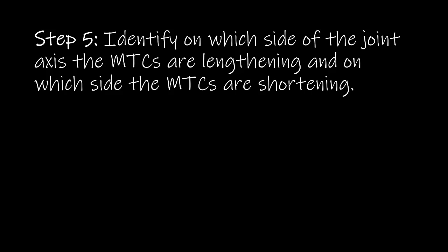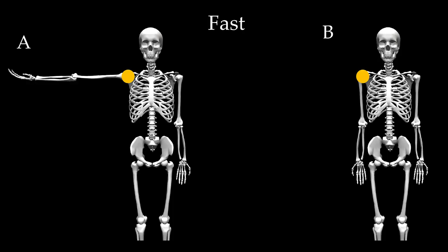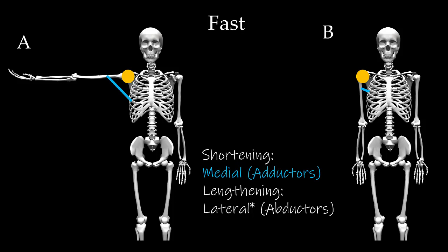Step 5 is to identify on which side of the joint axis the MTCs are lengthening and on which side they are shortening. I am only going to illustrate the MTCs on the medial side of the joint, as they are easier to see. We observe the length of the MTCs on the medial side in position A, and in position B they are shorter. So the MTCs that are shortening are the medial side MTCs — the adductors — while the ones lengthening are on the lateral side, the abductors, which are not shown in this example.